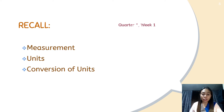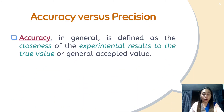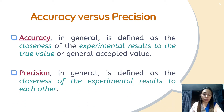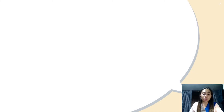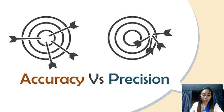Now, this time, we are going to discuss accuracy and precision. Accuracy in general is defined as the closeness of the experimental results to the true value or generally accepted value. While precision in general is defined as the closeness of the experimental results to each other. For us to be able to clearly see the differences between accuracy and precision, let us use these dartboards.